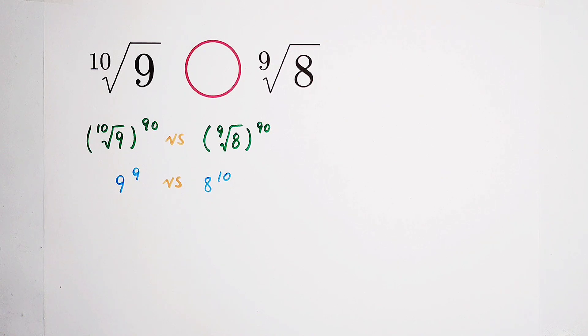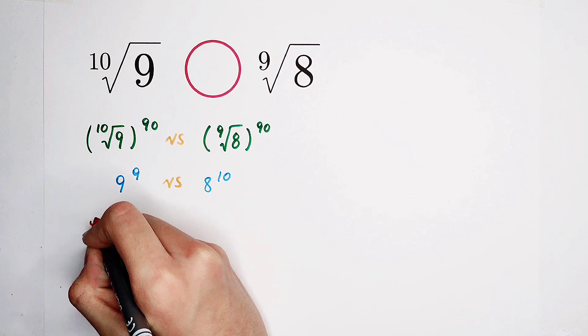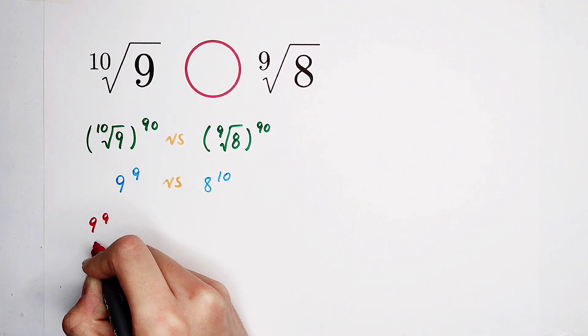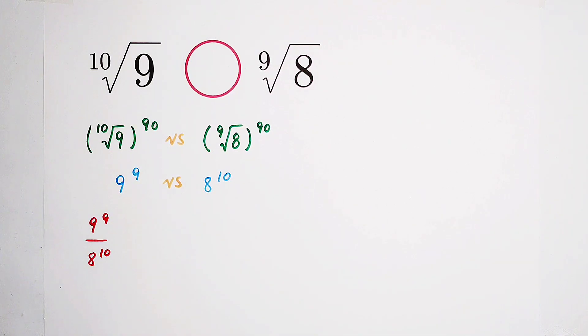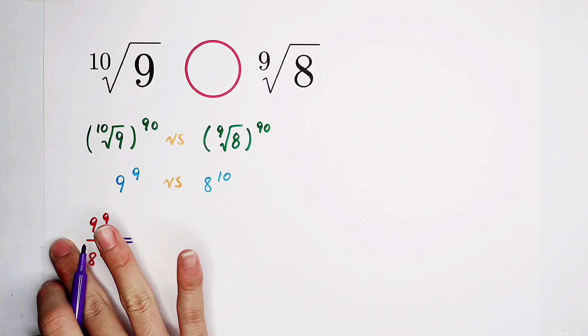By which method? Of course, division. Let 9 to the power of 9 be divided by 8 to the power of 10. Then, simplify it further. We only have to compare this quotient with 1.